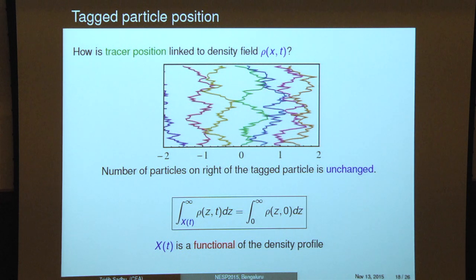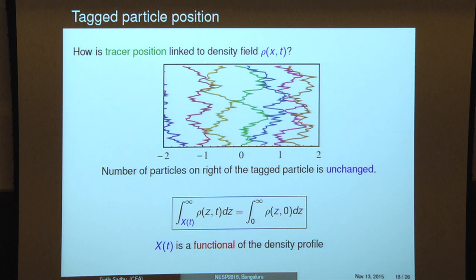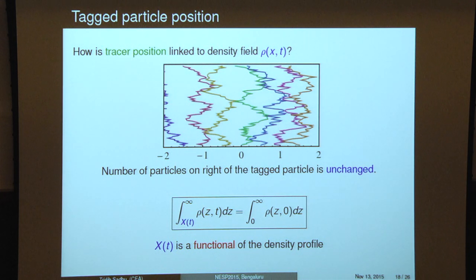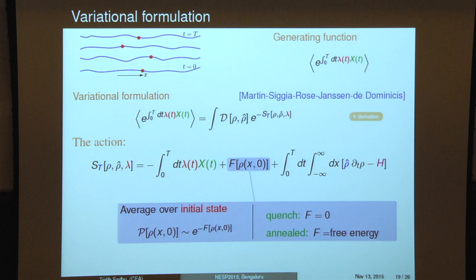The second part is how to relate the position of the tagged particle to this fluctuating density field. The idea, due to Kiran, is to relate the tagged particle position using conservation of number of particles: at any time, the total number of particles on the right of the tagged particle remains unchanged. Writing this in integral form, with the tagged particle starting at the origin at t equal to zero, gives the tagged particle position as a functional of the fluctuating density field. One can then apply macroscopic fluctuation theory to compute the generating functional of the entire path of the tagged particle, which contains all the information about the entire multi-time statistics.